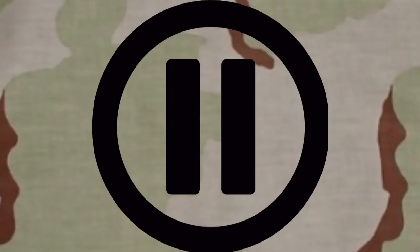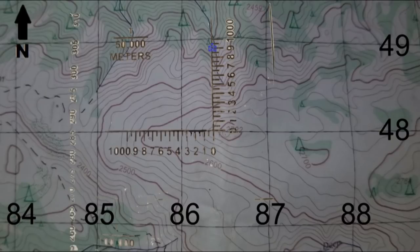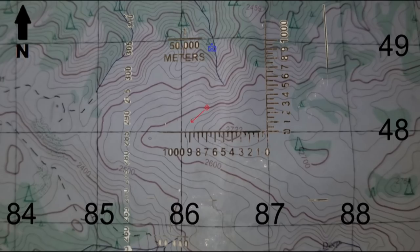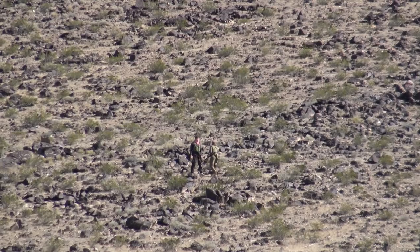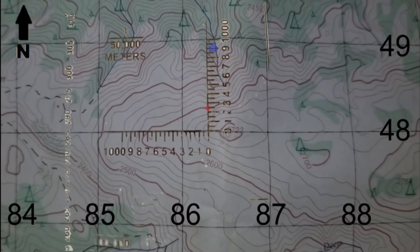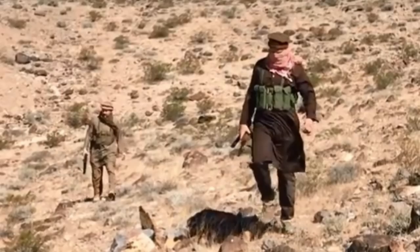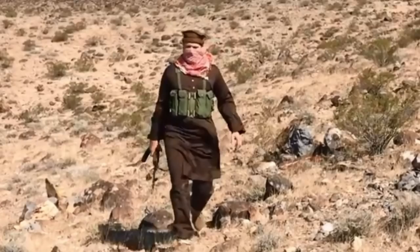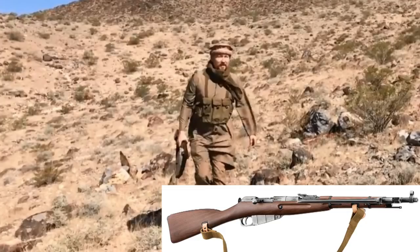At this time pause the video and generate your own SALUTE report based on the information provided and what you just saw. Now that you've had time to generate your own SALUTE report, here's what I have so that you can have something to compare yours to. Reporting unit: Alpha 2-1. Our location is at 86354890. Size — two military-aged males. Activity — walking southwest along the side of a mountain; subjects appear to be in disagreement with one another pertaining to the direction they are headed. Location — 86304825. Unit — appear to be Dirkestani militia or insurgents wearing brown and tan man dresses with Afghan-style Pakul hats, shemags around their necks, and green ChiCom-style chest rigs. Equipment — one is armed with an AKM and one is armed with an M44 Mosin bolt-action rifle.